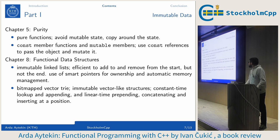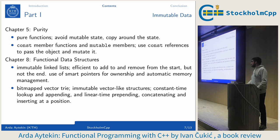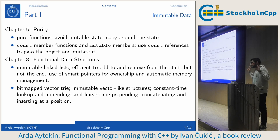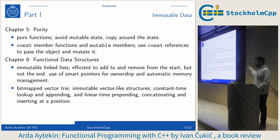Functional data structures covered include immutable linked lists and bit-mapped vector trees. The book explains how to build them from scratch — which was really enjoyable to read. It also elaborates on the complexities of these structures: for the immutable linked list, what's the complexity of adding and removing from the start, end, or midsection? For the vector tree — which is essentially the immutable version of a vector — what are the time complexities for appending, prepending, lookup, and concatenation?